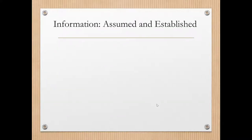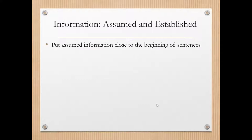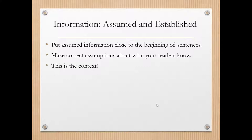We have to think about the reader's mind. In this slide, I'm going to talk about assumed and established information. We will make an assumption that a reader knows a certain amount of foundation on which we're going to build what we might teach them. We're going to put the assumed information — the information we think they already know — close to the beginning of sentences. We obviously have to make the correct assumptions about what our readers already know, think about who our audience is, and always provide the context for what we're going to tell them. We have to root our audience in that context.